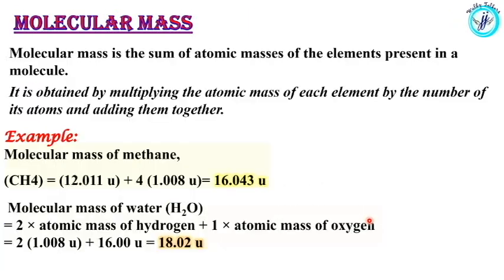The next topic is molecular mass. Molecular mass is obtained by multiplying the atomic mass of each element by the number of its atoms and adding them together. For methane (CH₄): carbon is 12.011u plus 4 hydrogen atoms, that is 4 × 1.008u. This calculation gives 16.043u - so the molecular mass of methane is 16.043u.